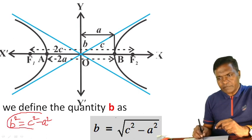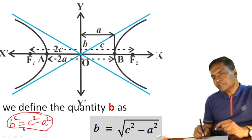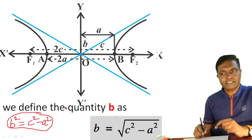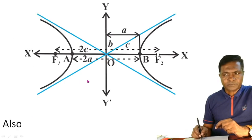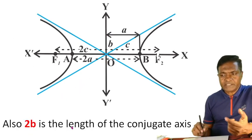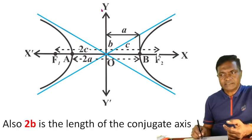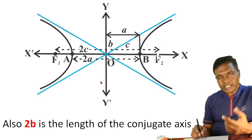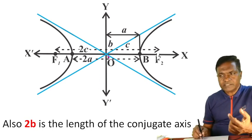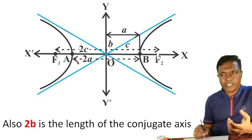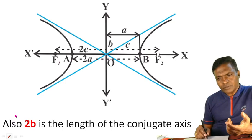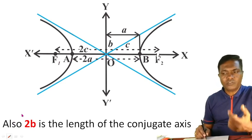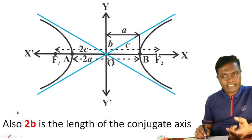In the case of hyperbola, we define the new quantity: B squared = C squared minus A squared. This quantity B lies along the Y-axis. The length of the conjugate axis is 2B. The conjugate axis is the line passing through the origin and perpendicular to the transverse axis, and its length is 2B.